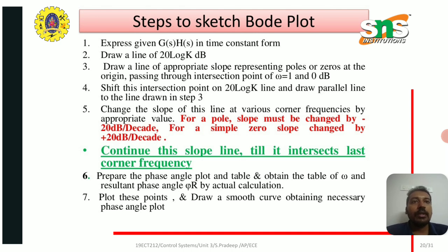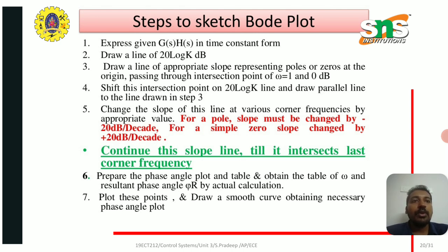Steps to sketch the Bode plot: express the given G(s)H(s) in time constant form. Draw a line of 20 log K. Draw a line of appropriate slope representing poles or zeros at the origin, passing through the intersection point of ω = 1 and 0 dB. Shift this intersection point onto the 20 log K line and draw a parallel line. Change the slope at various corner frequencies: for a simple pole, slope changes by −20 dB; for a simple zero, slope changes by +20 dB.